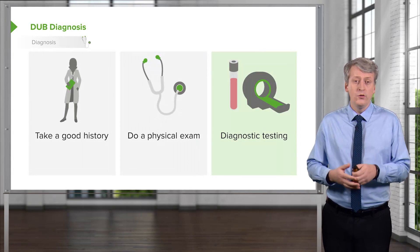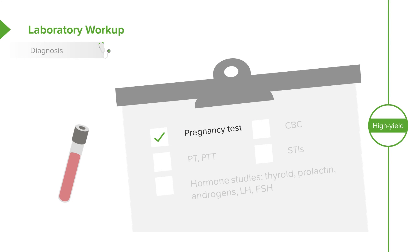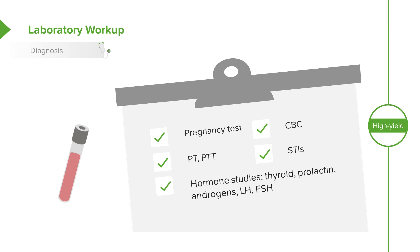We will often do diagnostic testing in these patients. Some key diagnostic tests: first is the pregnancy test. We might do a CBC to look for anemia and check a PT/PTT if we're concerned the patient is bleeding too much. Likewise, we can also check for sexually transmitted infections, as they may result in dysfunctional uterine bleeding. And if we suspect a hormonal problem, we will check hormone studies — we'll check thyroid, we'll check prolactin, and generally we can check androgens and LH and FSH to get a sense of how that axis is functioning.